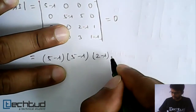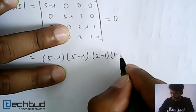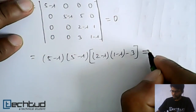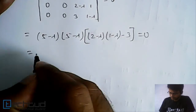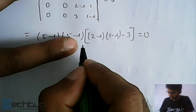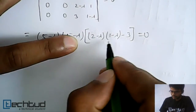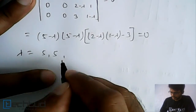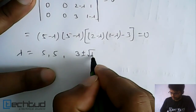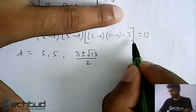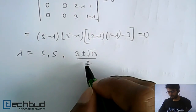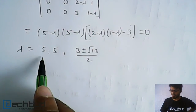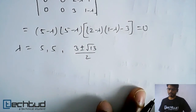So it will be 2 minus lambda into 1 minus lambda minus 3, all equal to 0. After solving, one value of lambda is 5 (repeated), and from the quadratic equation we will get 3 plus-minus root of 13, upon 2. So for this 4×4 matrix we have 4 eigenvalues: 5, 5, and the two quadratic roots.